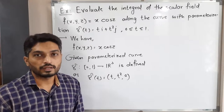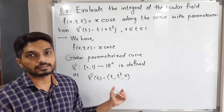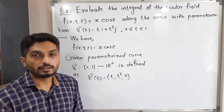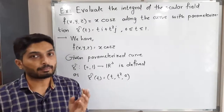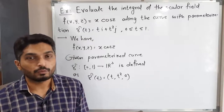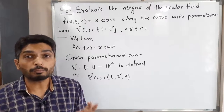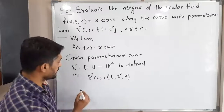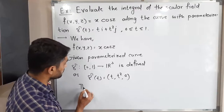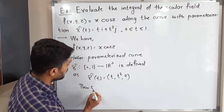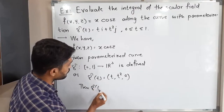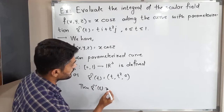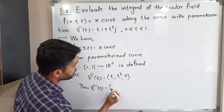After that, we want γ'(t) and the norm ||γ'(t)||. Let us find those values. The derivative γ'(t): the derivative of t is 1, the derivative of t² is 2t, and the derivative of 0 is 0.